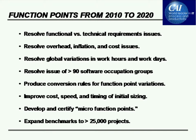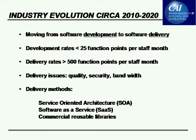Another need is to develop micro function points for very small changes below the normal level at which function points can be counted, which is about 15 function points. We also need to expand the number of benchmarks, which currently you can buy from commercial sources like the International Software Benchmark Standards Group — around 5,000 to 6,000 — or from companies like Gartner, David Consulting, or SPR. But I think we need more than 25,000 projects commercially available to have at least a representative sample of everything being developed.